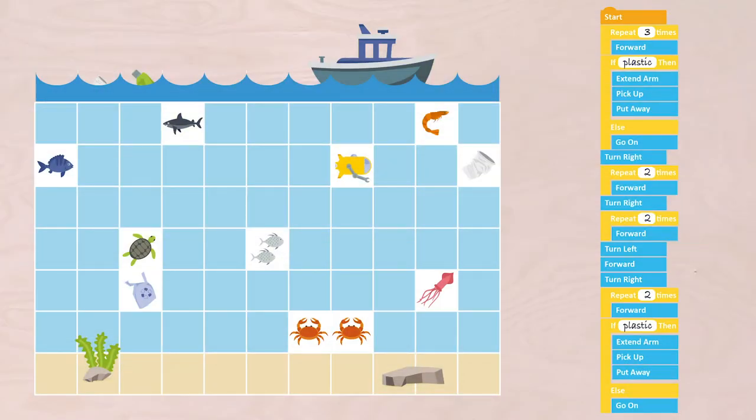I have written this algorithm. Start, repeat three times forward, if plastic then extend arm, pick up, put away. Turn right, repeat two times forward, turn right, repeat two times forward, turn left, forward, turn right, repeat six times forward, if plastic then extend arm, pick up, put away.